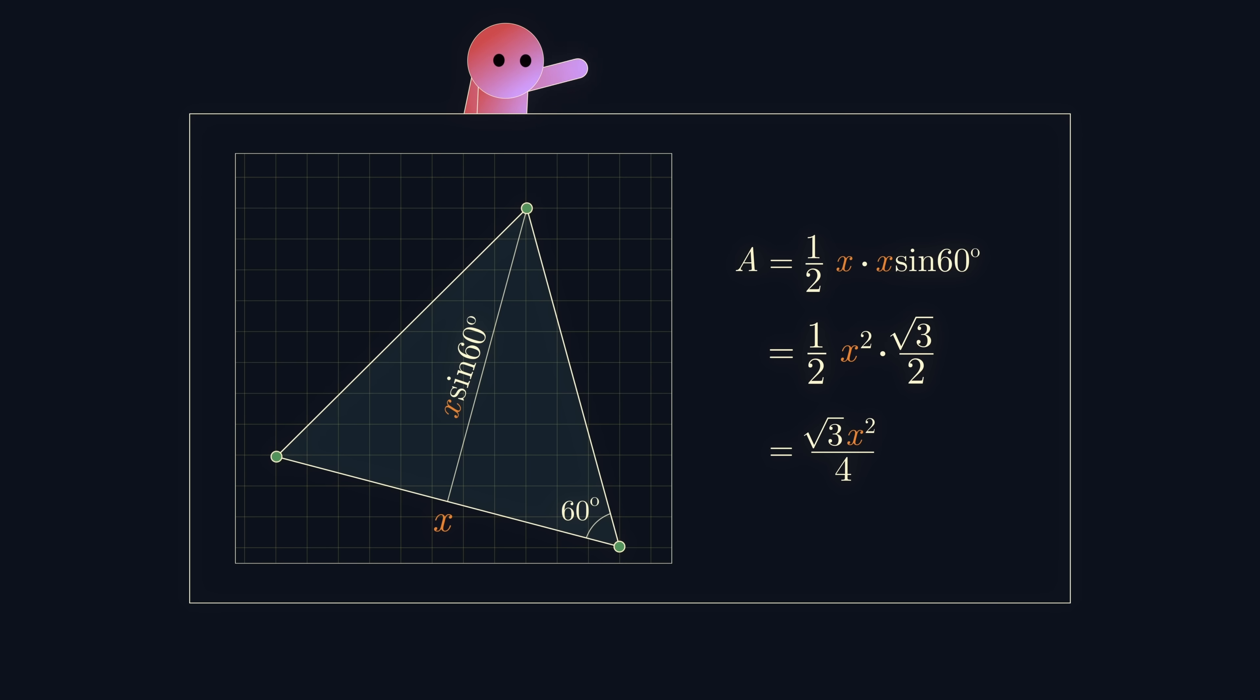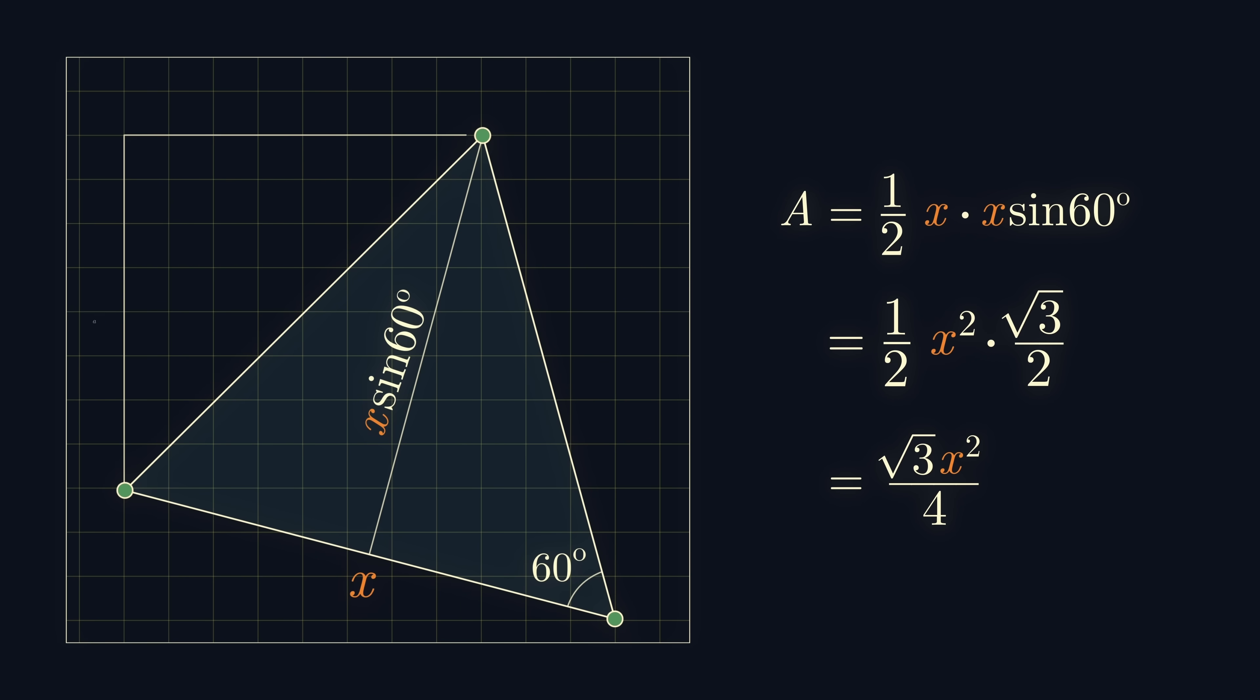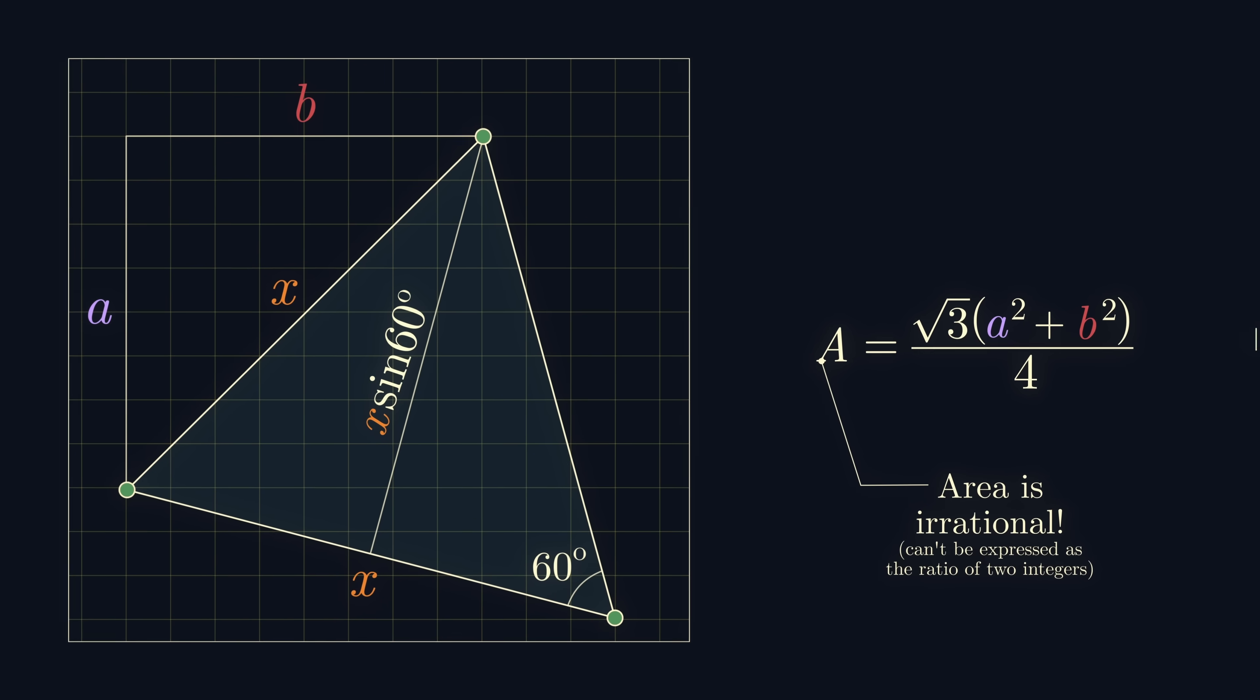What's interesting about this? Well, if the coordinates of our triangle's vertices were integers, then Pythagoras tells us that x squared is an integer. So, because root 3 is irrational, the area of this triangle is also irrational. That is, it can't be expressed as the ratio of two integers.